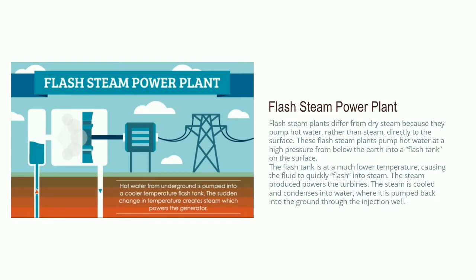The third type is the flash steam power plant. Flash steam uses a geothermal reservoir with water at a temperature greater than 360 degrees Fahrenheit. As it flows upward, the pressure decreases and some of the hot water boils to steam. The water and steam are separated, and the steam powers the turbine. Water is then recycled back into the reservoir. This is the most common type of geothermal power plant.